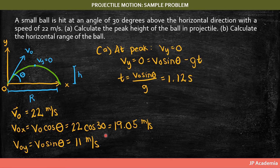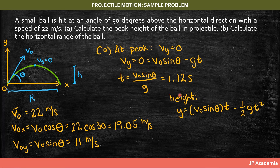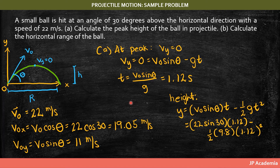At the peak, we know that v sub y equals zero. Using the expression for velocity, we can solve for the time to reach the peak, which equals 1.12 seconds. Then substituting this time into the y-position equation, we get the peak height h, which equals 6.17 meters.